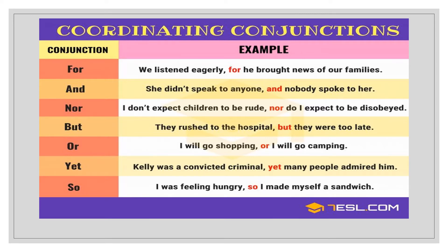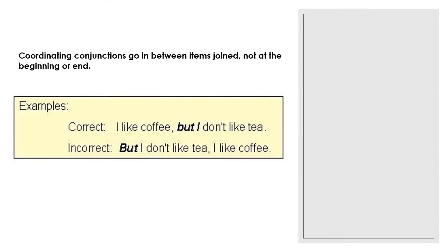The last coordinating conjunction is 'so'. For example: 'I was feeling hungry, so I made myself a sandwich.' It works like a cause-and-effect or chronology — when you feel hungry, what do you do next? So I made myself a sandwich. Always remember to put the conjunction in the middle of the sentence. You cannot put it at the beginning or at the end.